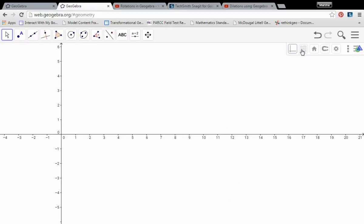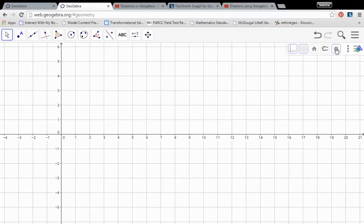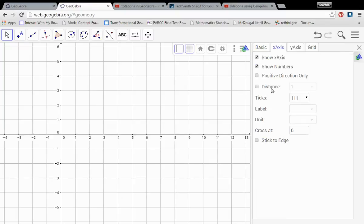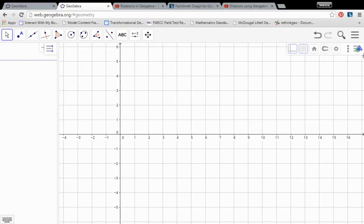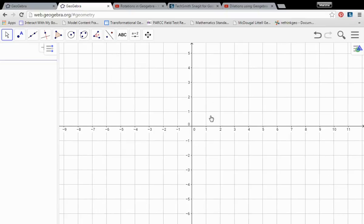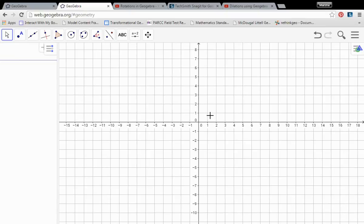Turn on our axes and our coordinate grid. Set my distance on my axes to 1. There's a little more explanation of this process in the reflections video if you need to go back to that. Center and kind of scroll out.